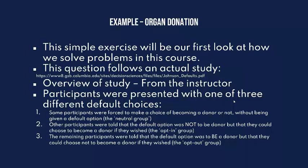The final group, the opt-out group, was told that the default option was that you are going to be an organ donor, but you could choose not to be if you wished. So basically we have three different groups, all trying to recruit organ donors, but how it's presented differs: you must make a choice, you're not an organ donor but can opt in, or you are an organ donor and can opt out. The question is: will the way it's presented make an impact?